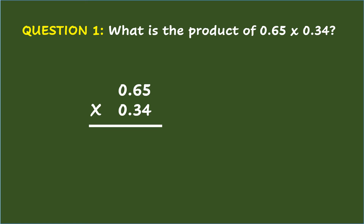So, 4 times 5 equals 20. But since the answer is more than 10, regroup 2 to the next higher place and retain 0. Next, 4 times 6 plus 2 equals 26. Since the answer is more than 10, regroup 2 to the next higher place and retain 6. Then, 4 times 0 plus 2 equals 2.